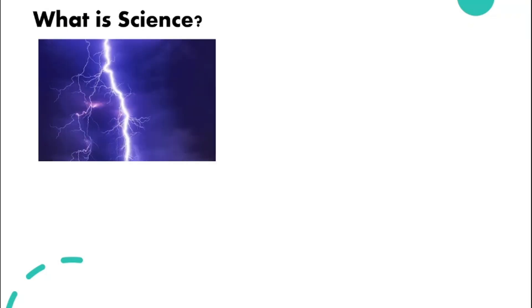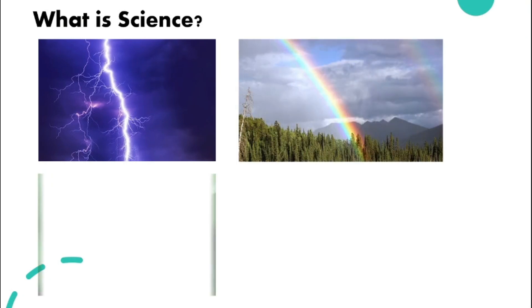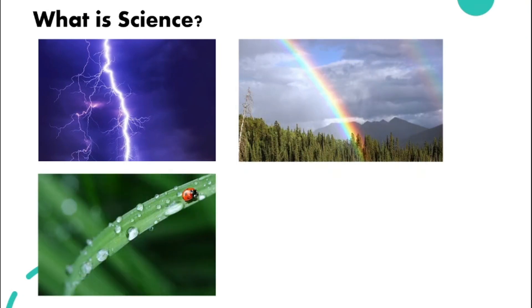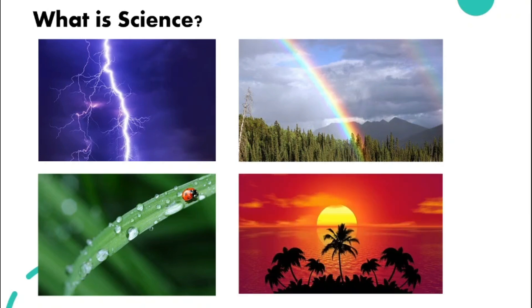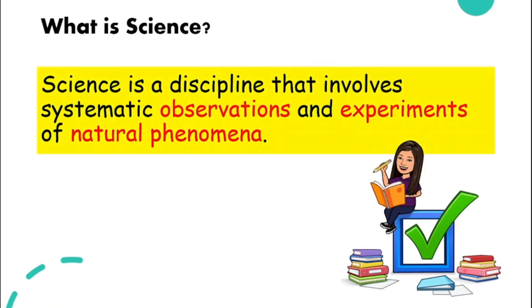What is science? If you observe the phenomena around you, for example, the lightning, beautiful rainbow, and also the refreshing dew on the surface of leaves in the morning, and also the romantic sunset, these are all natural phenomena. What is science? Science is a discipline that involves systematic observations and experiments of natural phenomena, which we have looked at a few examples earlier.